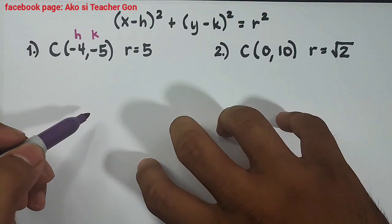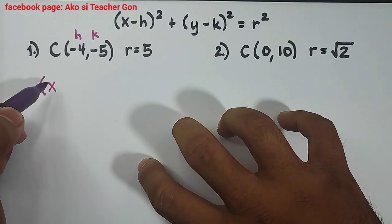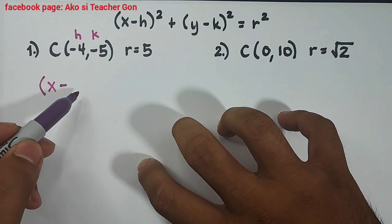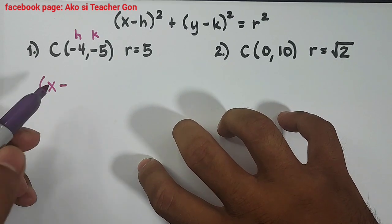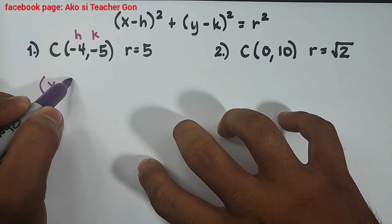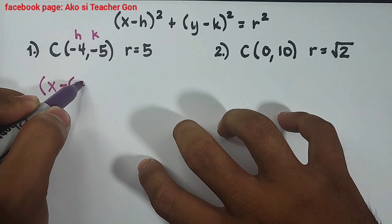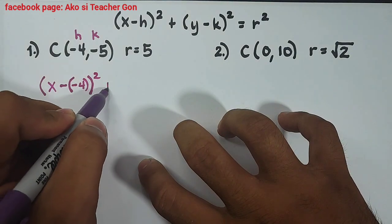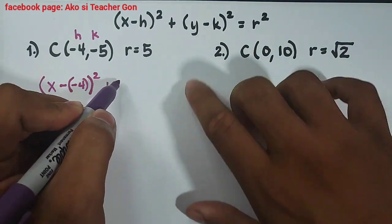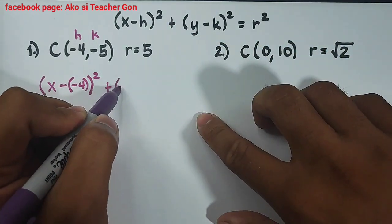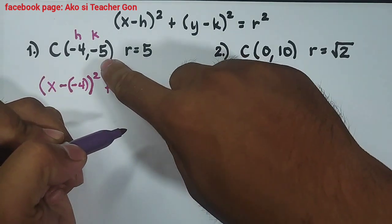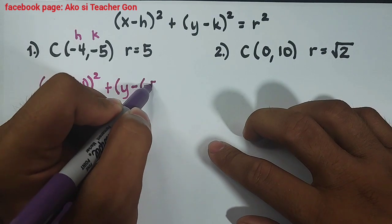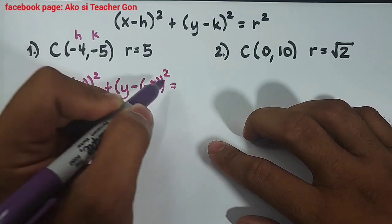What will happen is that we have the quantity of x minus, and as you can see the value of h is negative. If the value of h is negative you need to place it inside the parentheses which is -4, and then square. Plus for this part, y minus, again your k is negative, we will use a parentheses, -5, square, is equal to your r square. Your r is 5 and that would be 5 squared.